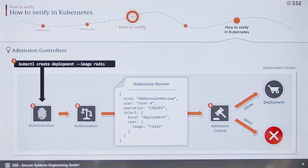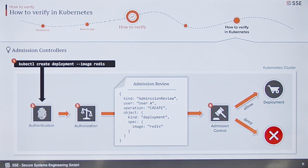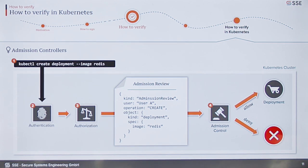Admission controllers have been mentioned a few times in other talks. These are little services you can install in your cluster and hook up into the Kubernetes API. Hooking up into the Kubernetes API means essentially that every time you want to create any kind of resource — here for example a deployment — you go through three steps: first the API server authenticates you, then authorizes you, and then a so-called admission review is sent to all your admission controllers. This admission review contains information such as who is trying to do what with what kind of spec — in this case, user A tries to create a deployment with the image Redis.